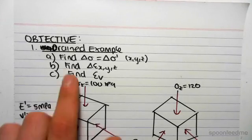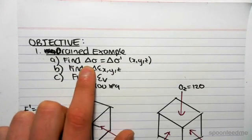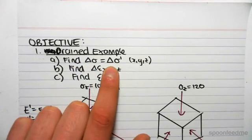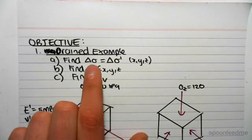Hey guys, the objective for this video is to look at a drained example. The way we do that is we first find the change in total stress, which is the change in effective stress. Because the sample is drained, there's no excess pore water pressures, which means that this relationship is true.